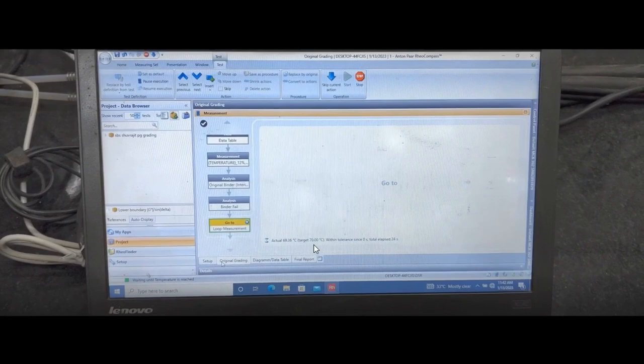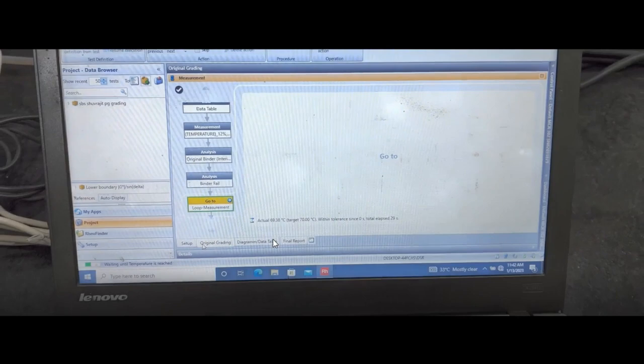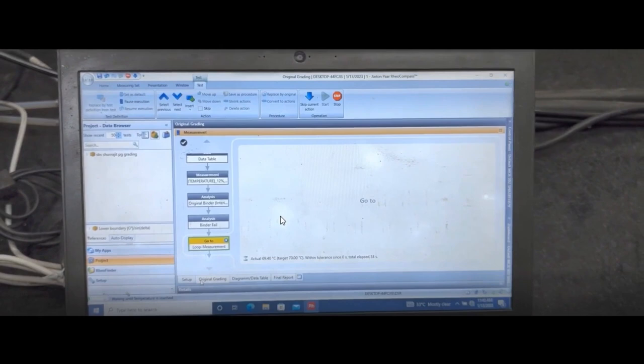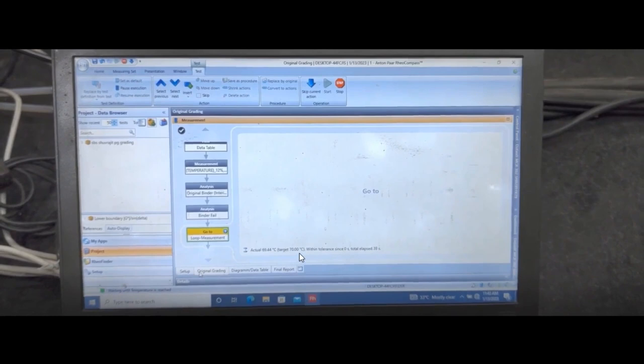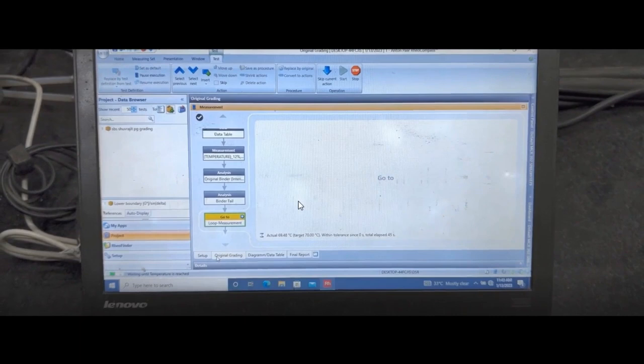The temperature increases to 70 degrees Celsius from 64, and then this test is repeated. This temperature will keep on changing until you get a value of G*/sin(δ) of 1 or less than 1 kPa.